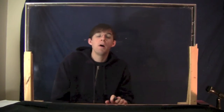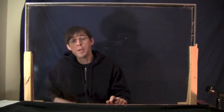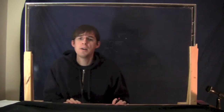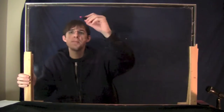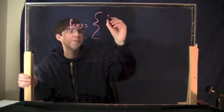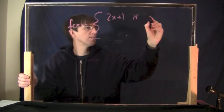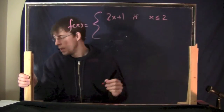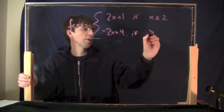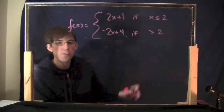I want to talk about continuity on piecewise functions. These are kinds of functions we haven't really talked about yet, but hopefully you've seen them before — functions which are defined on more than one piece. Something like f of x equals 2x plus 1 if x is less than or equal to 2, and minus 2x plus 4 if x is greater than 2. This is called a piecewise function because it's got two pieces.